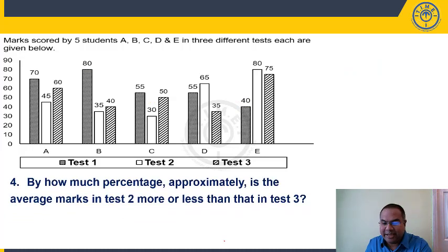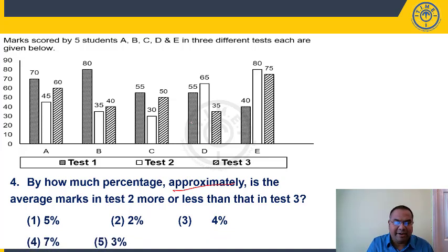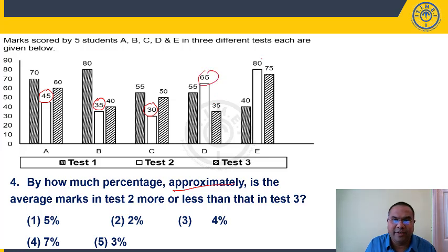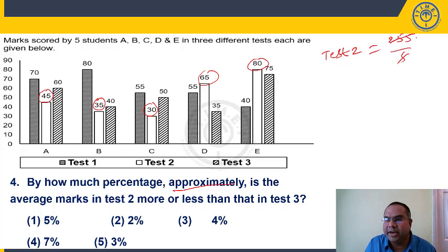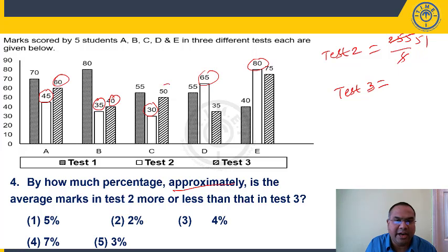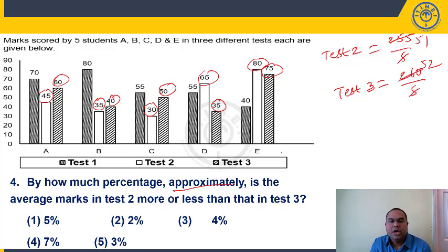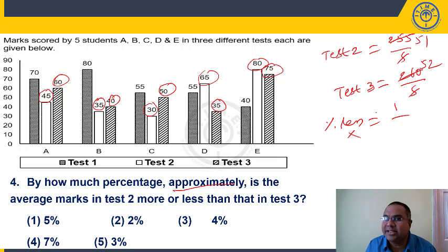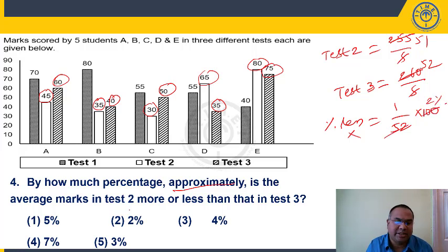Question 4: By what percentage is the average marks in test two more or less than test three? Sum of test two marks = 255; average = 51. Sum of test three marks = 260; average = 52. Difference = 1. Percentage less = 1/52 × 100 ≈ 2%. Answer: choice 2.